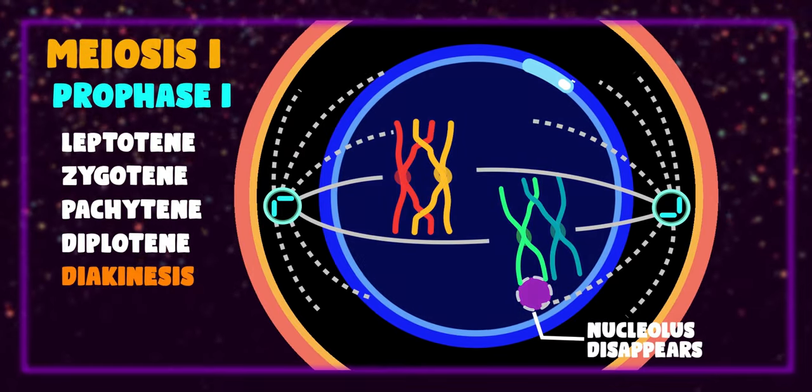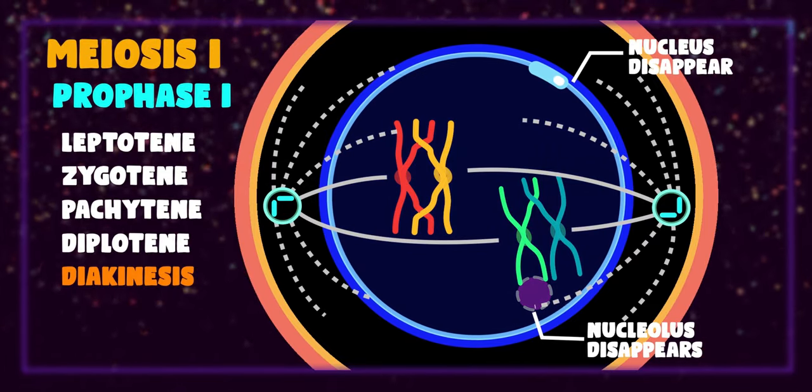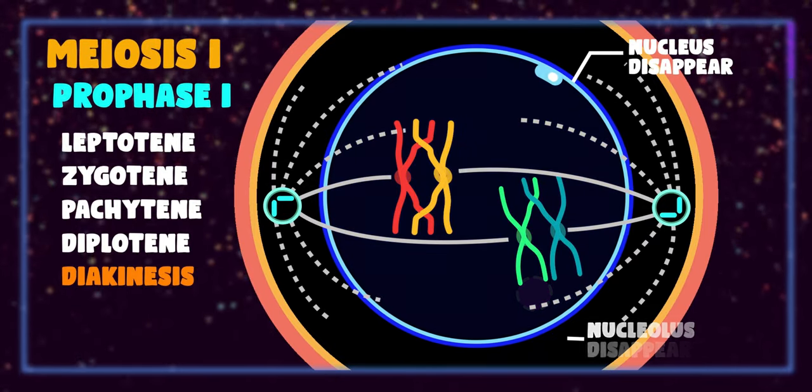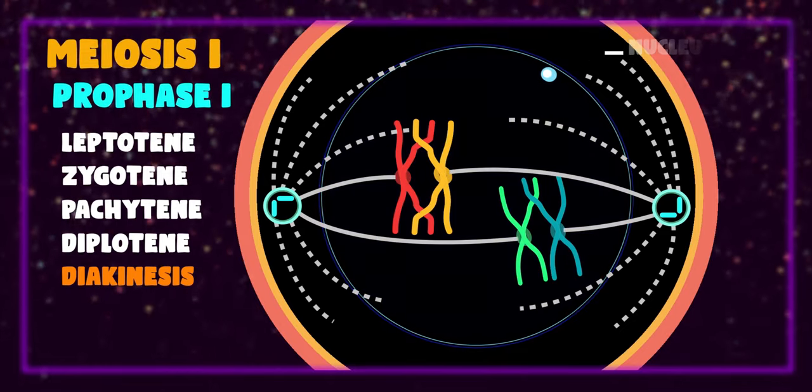The last stage of prophase one is diakinesis, in which the nucleolus and nuclear envelope disappears. This marks the end of prophase one.